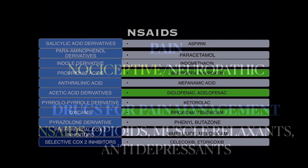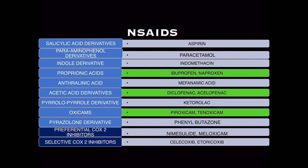Hence, choosing the right NSAID is very important. NSAIDs are classified as non-specific COX inhibitors and COX-2 inhibitors. COX-2 inhibitors have few advantages: they do not inhibit the cyclooxygenase-1 pathway, so gastrointestinal side effects and the platelet inhibitory action are minimal. The most widely used non-specific COX inhibitors are aspirin and paracetamol. Aspirin is used prophylactically to avoid thromboembolic events by its anti-platelet effect, so we should think twice before giving a second NSAID to a patient already on aspirin.